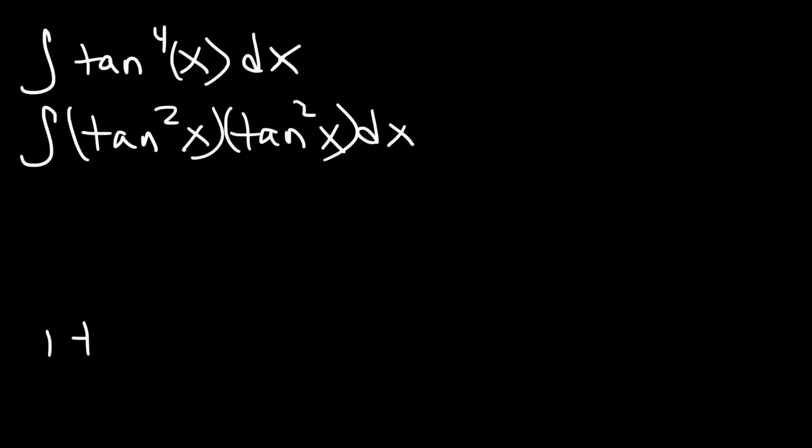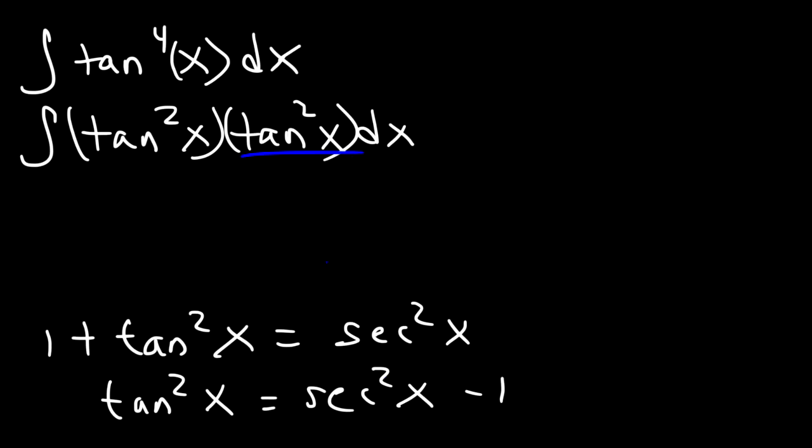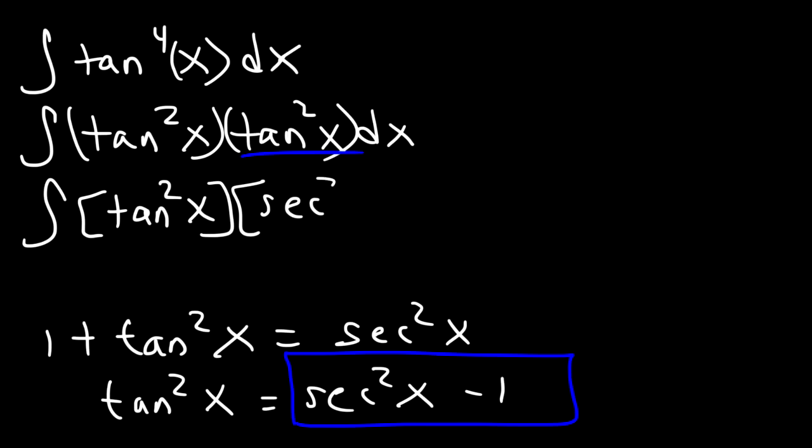Now you need to know the Pythagorean identities. 1 plus tangent squared is equal to secant squared. Subtracting both sides by 1, we can see that tangent squared is secant squared minus 1. So I'm going to replace tan squared with this expression. Now I have the integral of tangent squared times secant squared minus 1.